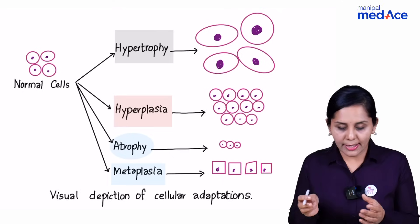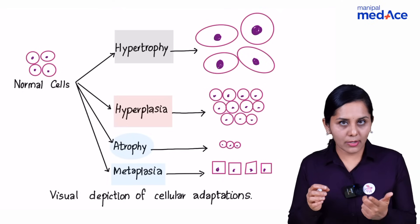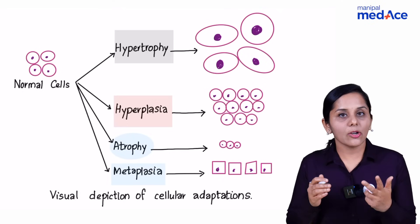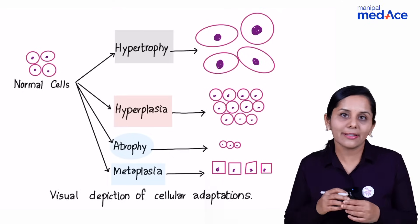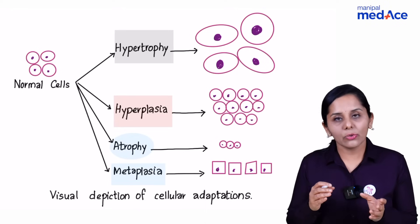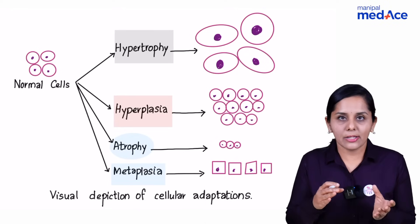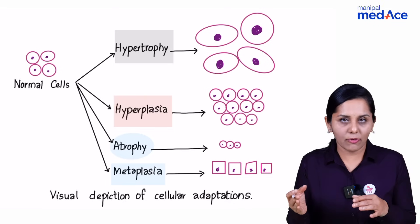Whereas if the cell number reduces, the size also reduces — the organ size reduces — then you call it atrophy. Or if the cell totally changes from one form to another form, you call this as metaplasia.